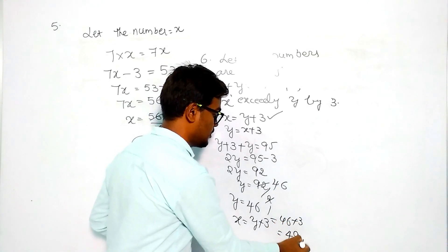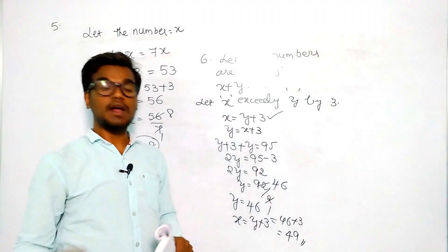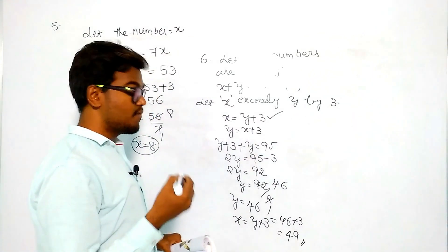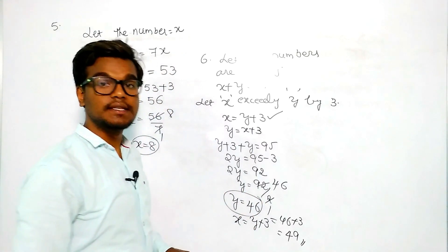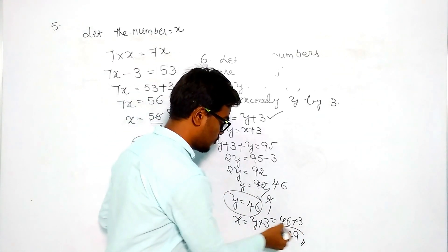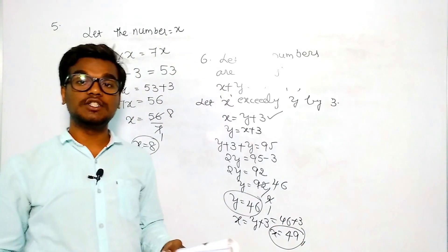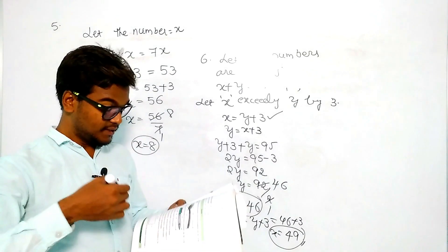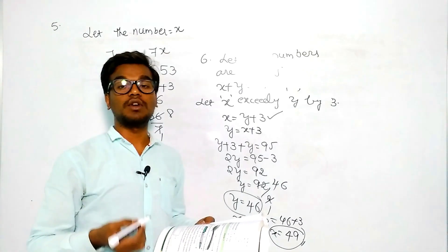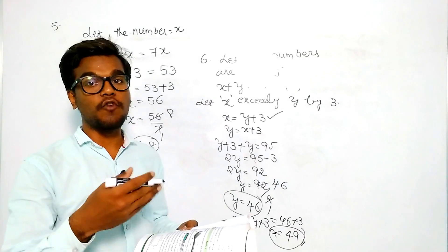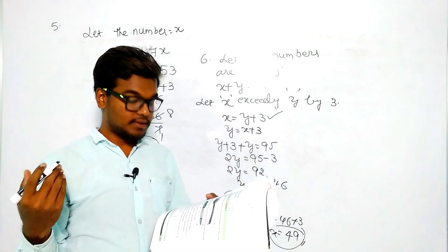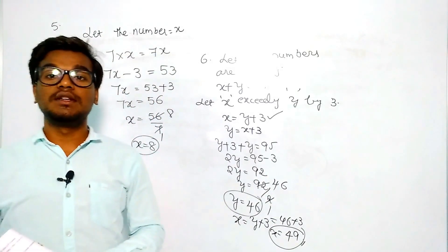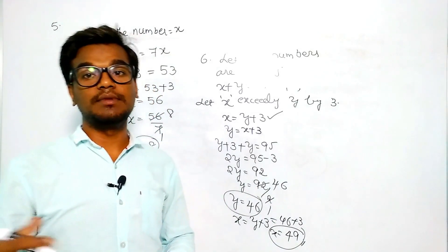So we got x value as 49 and y value as 46. The required two numbers are 46 and 49 - 49 exceeds 46 by 3. Okay, thanks for watching this video.